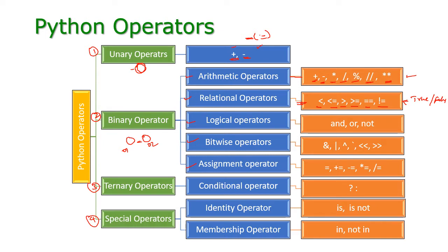The next one is logical operator. We are having three logical operators: AND, OR, and NOT. Here also the result will be either true or false. These are the logical operators.